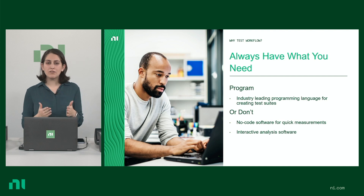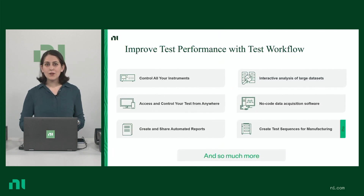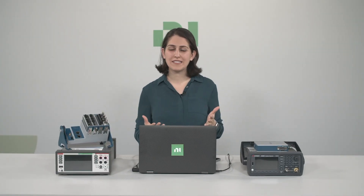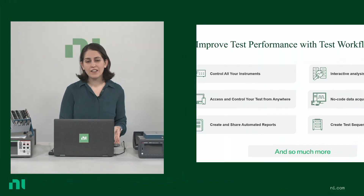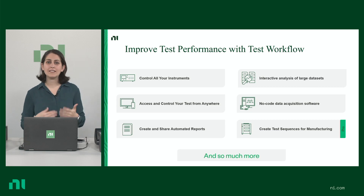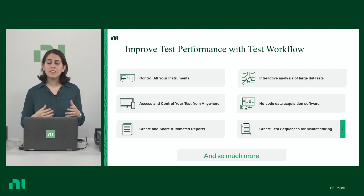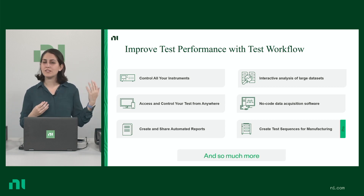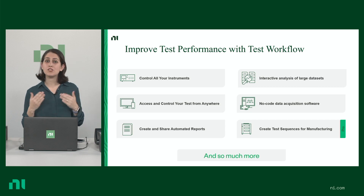After all, test performance is business performance. With Test Workflow, there are so many different ways you can improve your test performance — things like controlling all of your instruments or checking on your test from your phone. You can improve performance with interactive analysis of huge data sets. You could also save time by automating reports to HTML, PDF, or Office. You can also create efficient test systems by integrating software from different engineers in different languages into one solution.